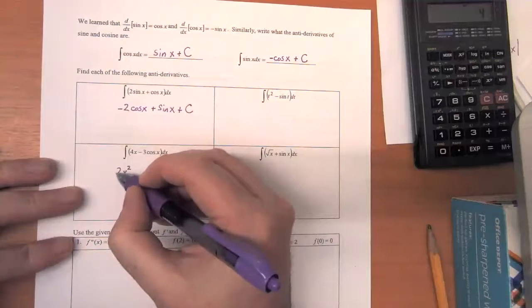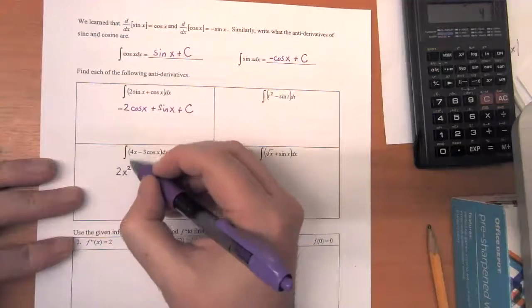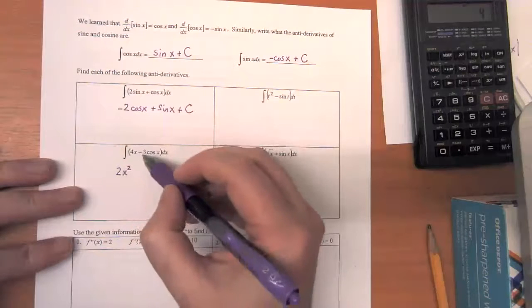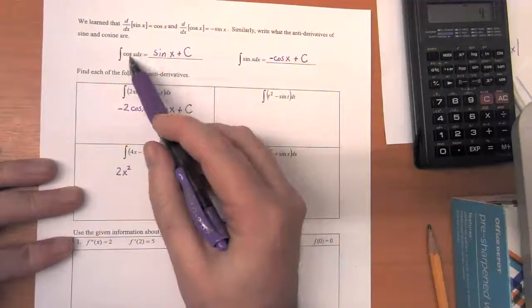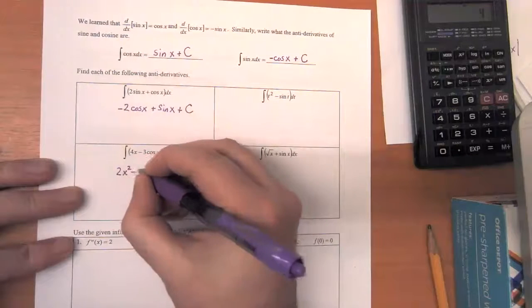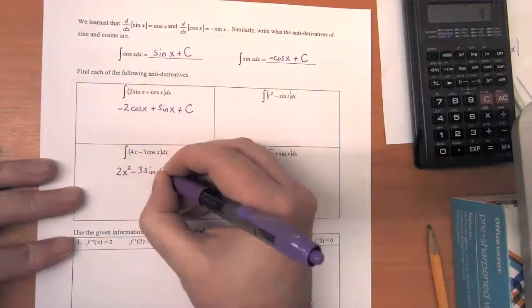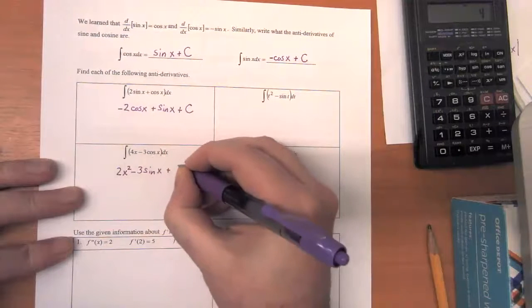Let's double check the derivative of 2x squared. Two times two is four times x. So that's exactly what I want to have. And then the antiderivative of cos(x) is equal to sin(x). So we're going to write this as -3sin(x) plus a constant term.